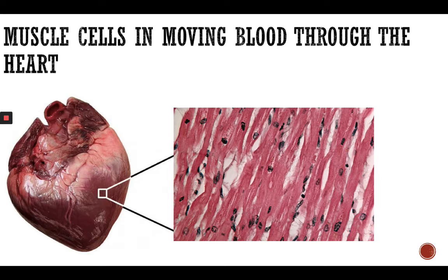Cardiac muscle tissue is called myocardium. It's a specialized type of muscle that only exists in the heart, and it contracts and relaxes involuntarily, responsible for keeping the heart pumping blood around the body. As you can see in the image, this is how cardiac muscle actually looks.